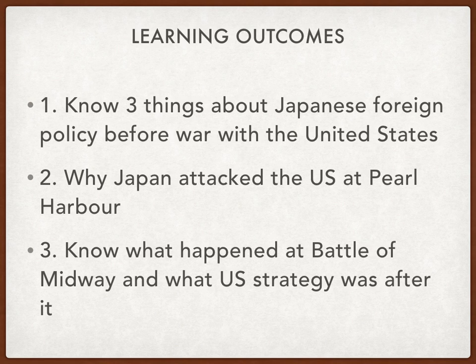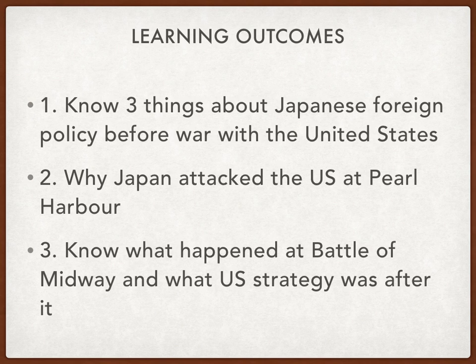That brings us to the end of our presentation. By now you should know three things about Japanese foreign policy before the war with the United States in 1941 — the taking of Indochina, the taking of Manchuria, and the invasion of China in 1937 — as well as the Berlin Pact. You should also know why Japan attacked the US at Pearl Harbour, and finally what happened at the Battle of Midway and what the US strategy was after.